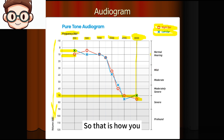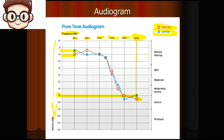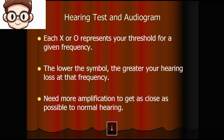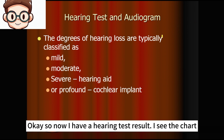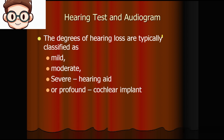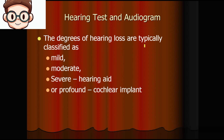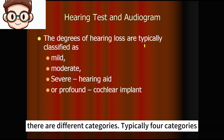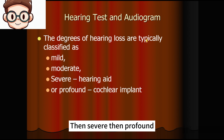That's how you interpret the results from a doctor after a hearing test. Now, once we have the hearing test result and see the chart, what does that mean? Based on the degree of our hearing loss, there are typically four categories: mild hearing loss, moderate, severe, and profound.